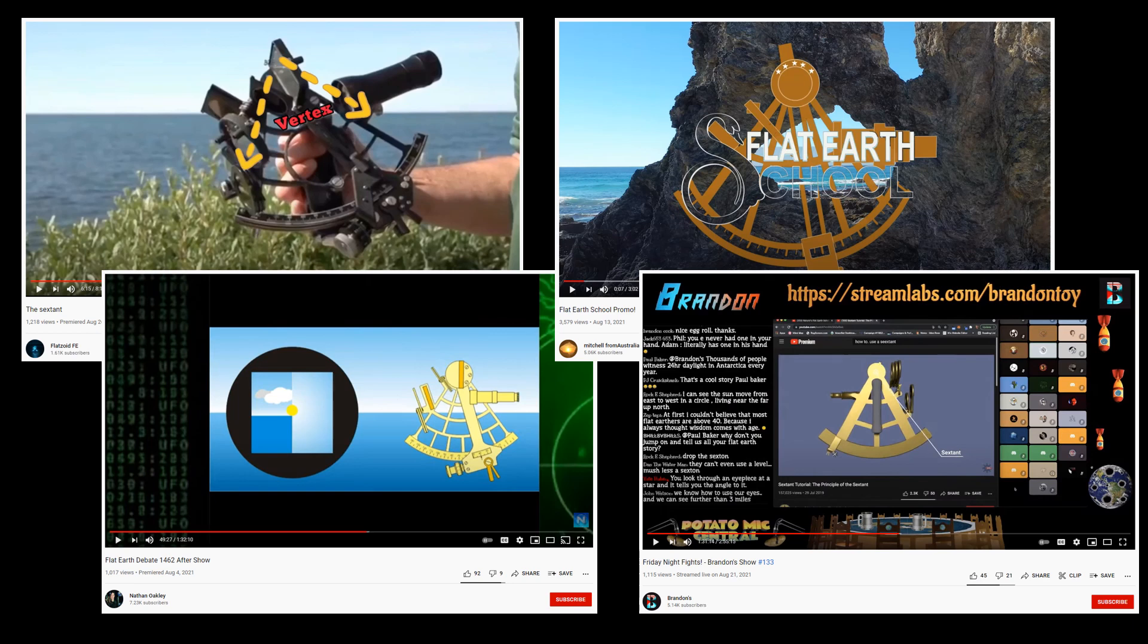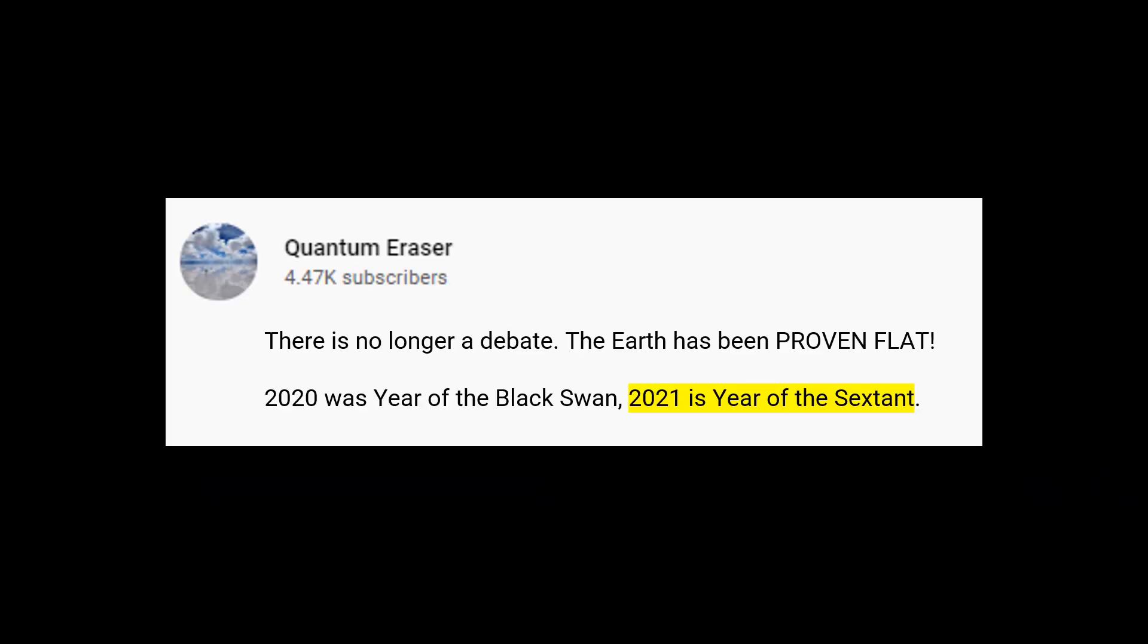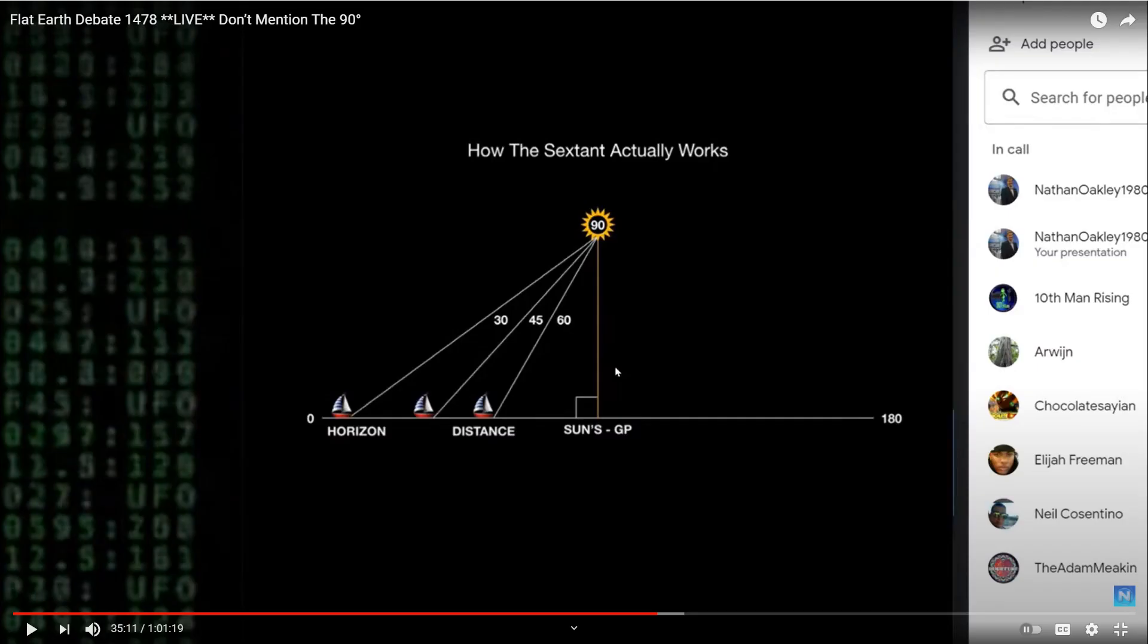Flat Earthers are now claiming that the sextant proves the Earth is flat. In fact, Flat Earth High Priest Quantum Eraser is claiming that 2021 is the year of the sextant. And this graphic is their proof.